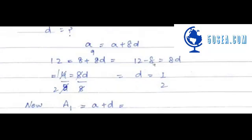Here 12 minus 8 is equal to 8d. So 12 minus 8 is subtracted, giving 4 equals 8d. We divide by 8, so d equals 1/2.